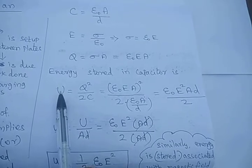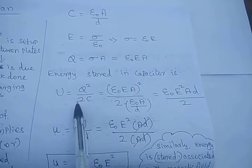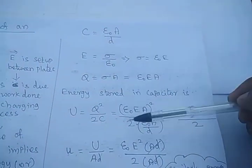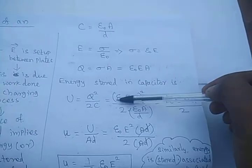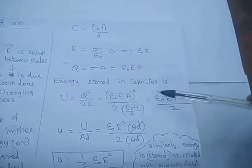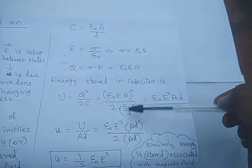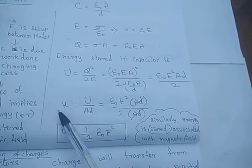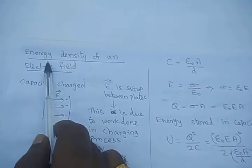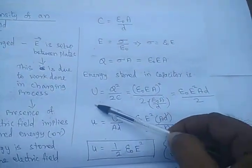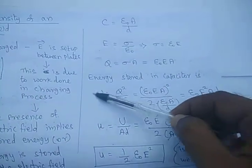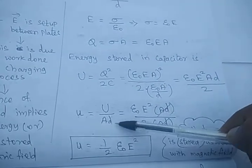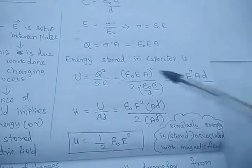The formula for energy stored in a capacitor is U = q²/2C. Substituting q = ε₀EA and C = ε₀A/d, we get q² as ε₀²E²A² in the numerator. The ε₀ and A terms cancel from the denominator, giving a simplified expression. Energy density means energy per unit volume, so we divide by volume, which is area times distance (A × d).